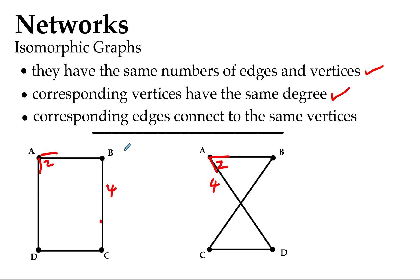And corresponding edges connect to the same vertices. Let's have a look at the edges here. You see A to B is connected, and there's an edge that connects A to B on the second diagram as well. We have B to C connected, and we have B down to C connected there as well in a slightly slopey way.